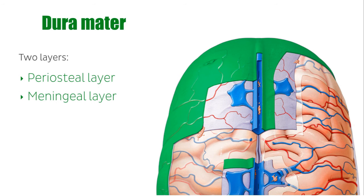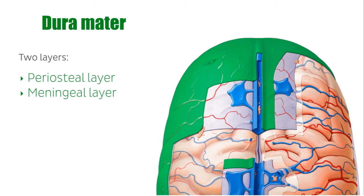The meningeal layer, the inner layer of the dura mater, forms the supporting capsule of the brain and is responsible for the formation of the dural infoldings, which we'll talk about later.